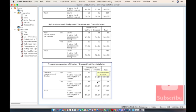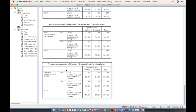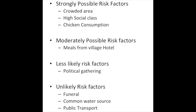Initially chicken consumption was not believed to be a strong risk factor, but 81% of people who consumed chicken are diseased, making it also a strong risk factor. We can now classify crowded area, high social class, and chicken consumption as strong possible risk factors; meals from the village hotel as a moderate risk factor; political gathering as less likely; and funeral, common water source, and public transport as unlikely risk factors.